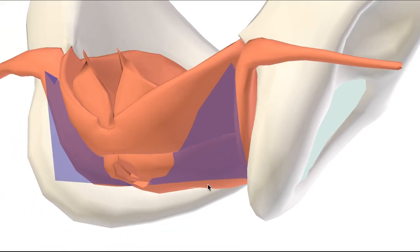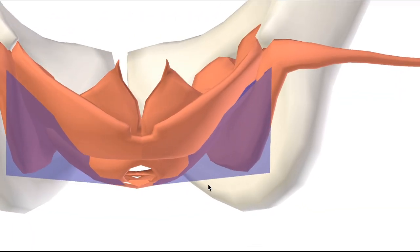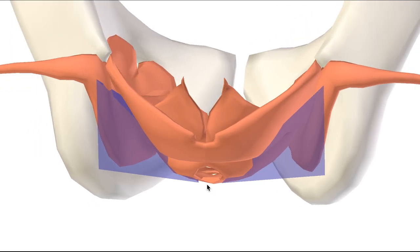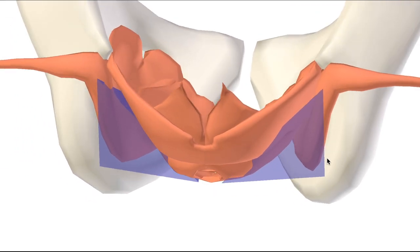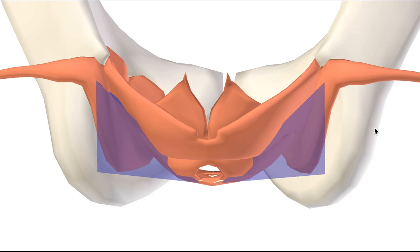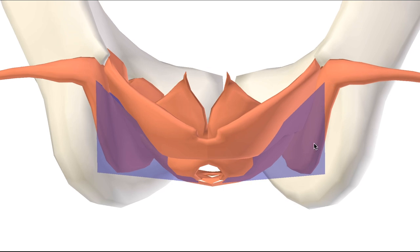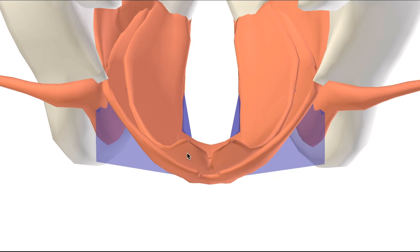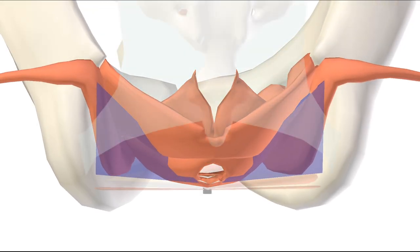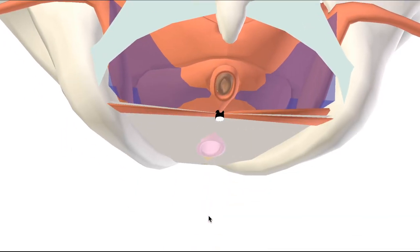So as always in anatomy, the form reflects function. So let's round out the boundaries now. As I mentioned, the lateral wall is obturator internus and part of the pubic bone. The medial wall, the pelvic floor muscles. The floor is the deep perineal fascia.